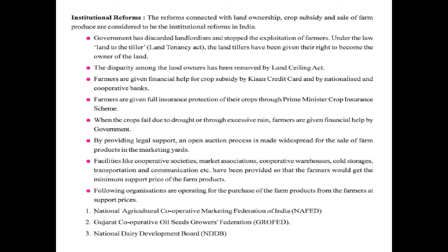Facilities like cooperative societies, market associations, cooperative warehouses, cold storages, transportation, and communications have been provided so that farmers get the minimum support price for farm products. Organizations operating for the purchase of farm products from farmers at support price include: the National Agriculture Cooperative Marketing Federation of India (NAFED), the Gujarat Cooperative Oil Seeds Growers Federation, and the National Dairy Development Board.